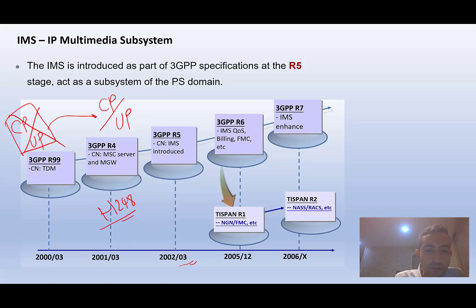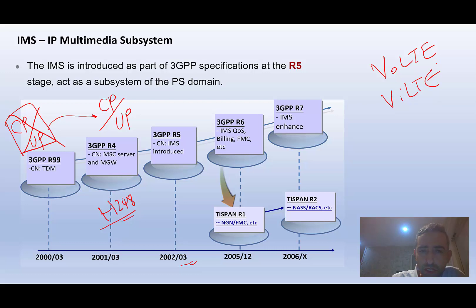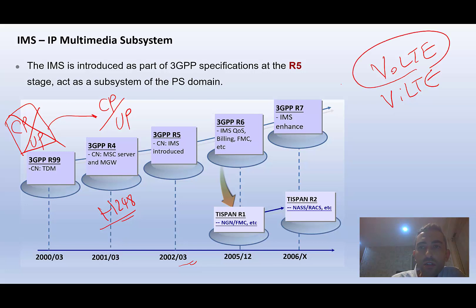Then in 2002 and 2003, 3GPP released Release 5, in which IMS was introduced into the core network. One of the most famous applications of IMS is Voice over LTE — VoLTE — and another is Video over LTE — ViLTE — along with many other applications like instant messaging, third-party applications, conferencing, and more.